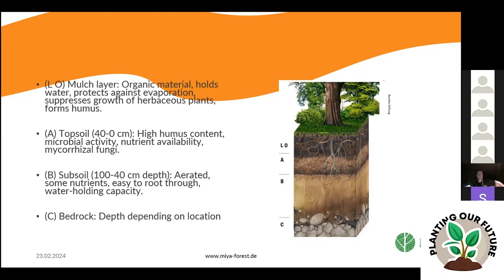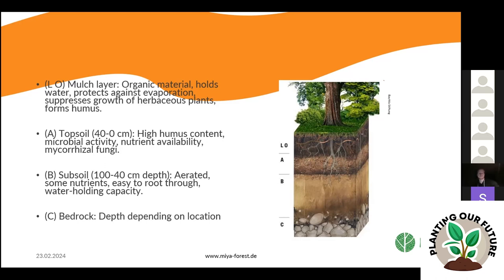Soil consists of layers. The topsoil, up to about 40 centimeters deep, ideally has high humus content, microbial activity, mycorrhizal fungi, and available nutrients for plants. Below that is the subsoil, which ideally is aerated, has some nutrients, is easy to root through, and has good water holding capacity — meaning when it rains, the soil doesn't become waterlogged and drown the roots, but also doesn't drain so fast that no water is retained. Below that is the bedrock — the rock of planet Earth itself.